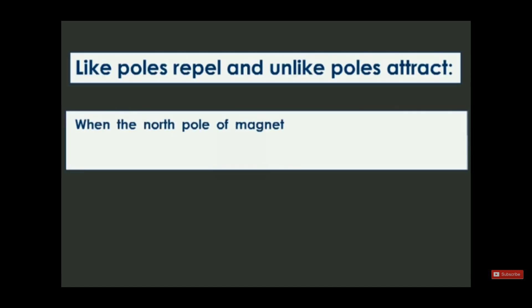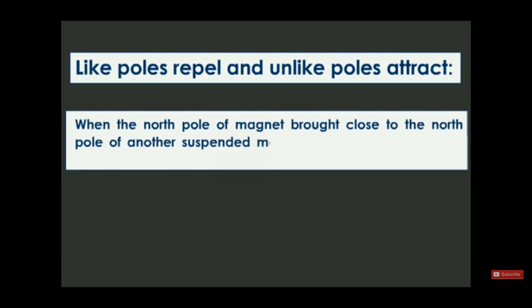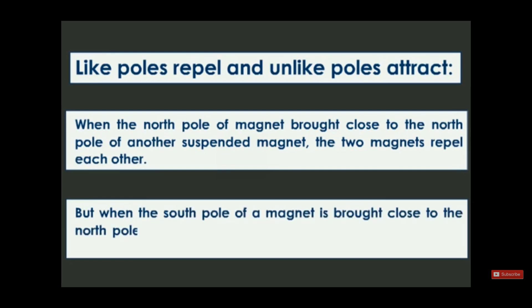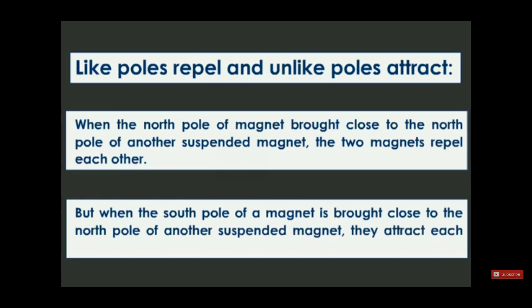Always when the north pole of the magnet gets close to the north pole of another magnet, they will repel because they are both like poles. But if we get the north pole and put it close to the south pole, they will attract because different poles attract. This is another property of the magnet.